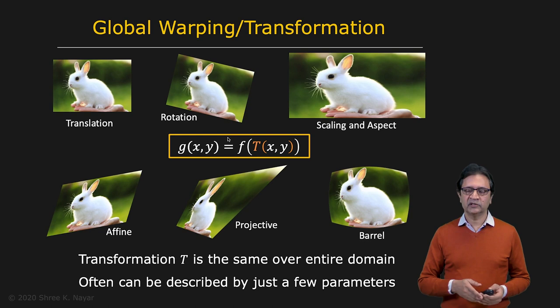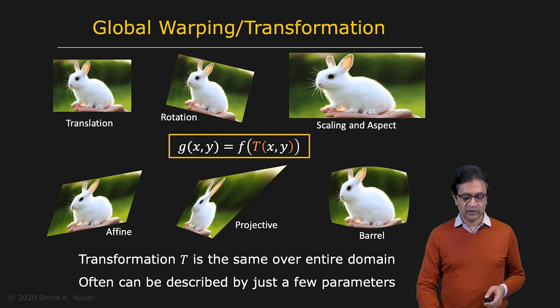So here are some global geometric transformations you can apply to an image. These are all image warps. You can translate the image, of course. You can rotate it. You can apply different types of scaling, squishing, etc. And you have affine transformations, which we'll talk about, projective transformation.